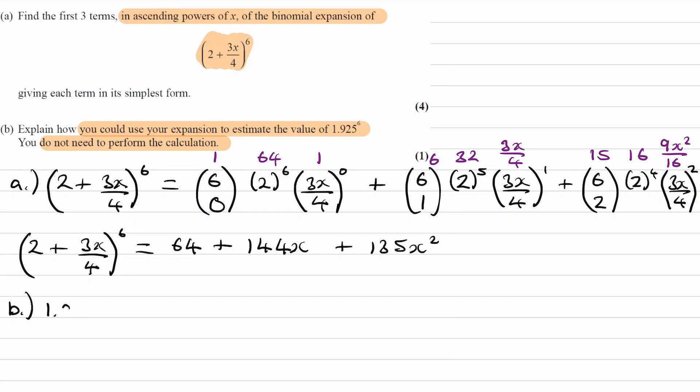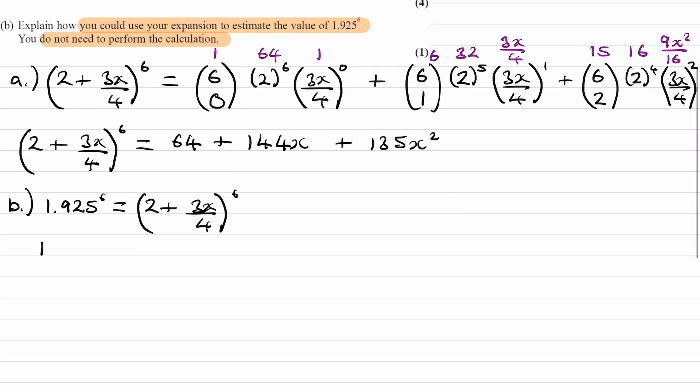We start with 1.925 to the power of 6. We set this equal to 2 plus 3x over 4 to the power of 6. We can cancel out the powers, and we end up with 1.925 is equal to 2 plus 3x over 4. We can rearrange this. 3x over 4 is equal to 1.925 minus 2, which is the same thing as minus 3 over 40.